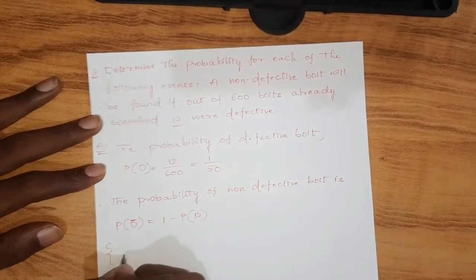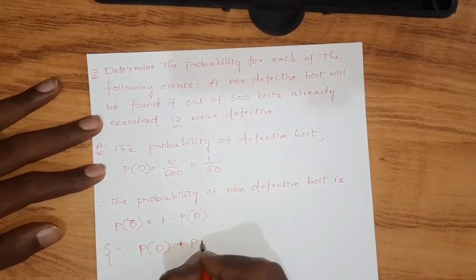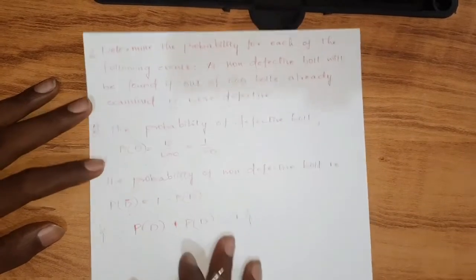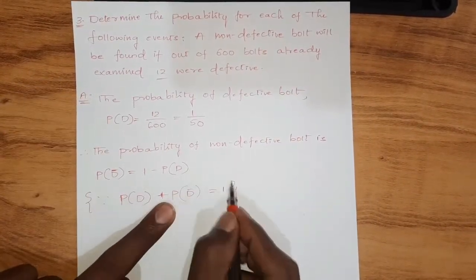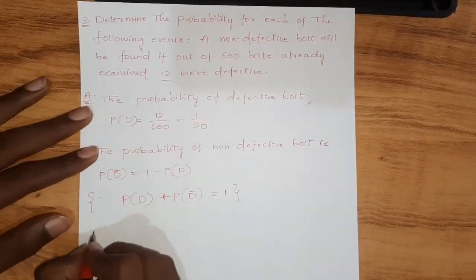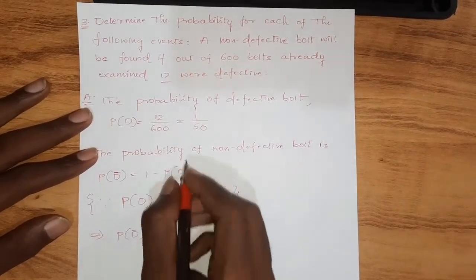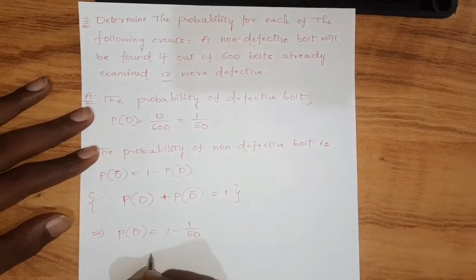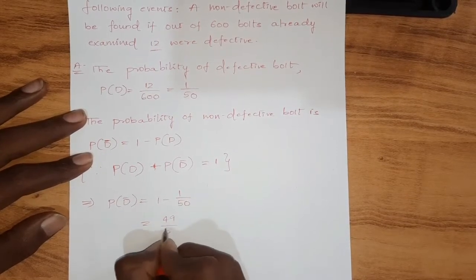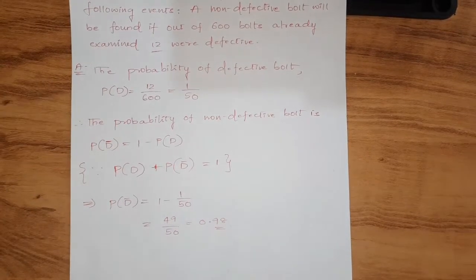The probability of a non-defective bolt is P(D̄) = 1 − P(D). We consider D as defective and D̄ as non-defective. The total probability is 1, so P(D̄) = 1 − 1/50 = 49/50, which gives 0.98. This is how we solve this problem.